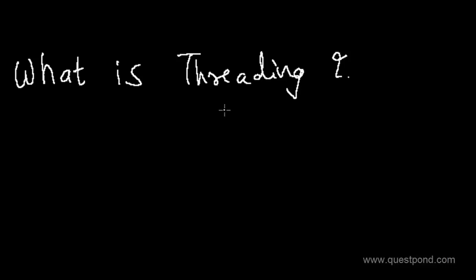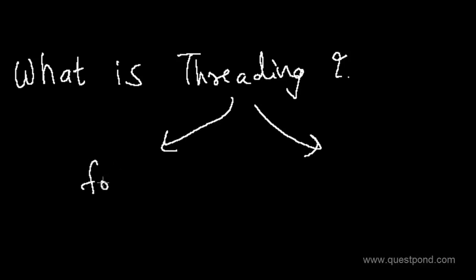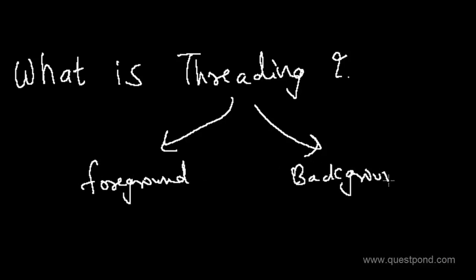In this video we will try to understand what exactly is threading in C# and also we will see a simple example. At the later end of the video we will try to understand two important types of threads: one which is called the foreground thread and the other one which is called the background thread.